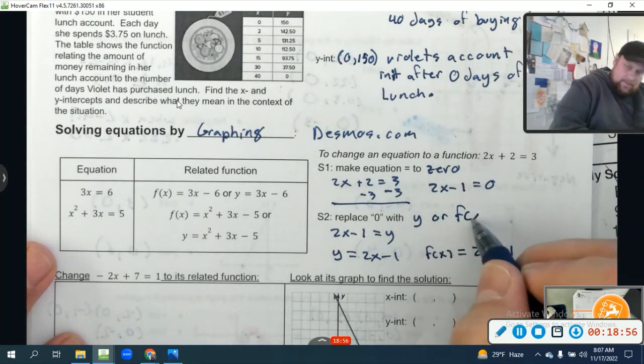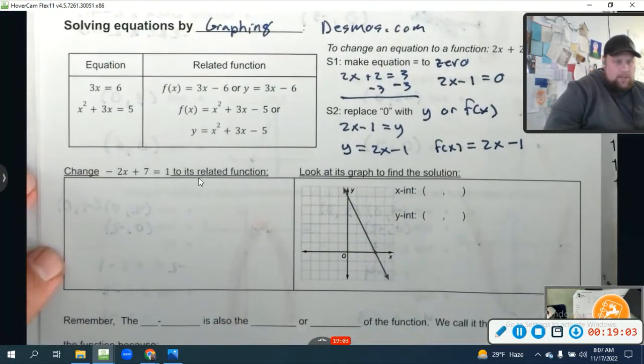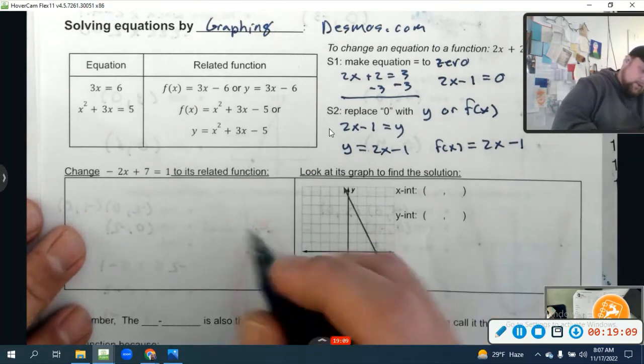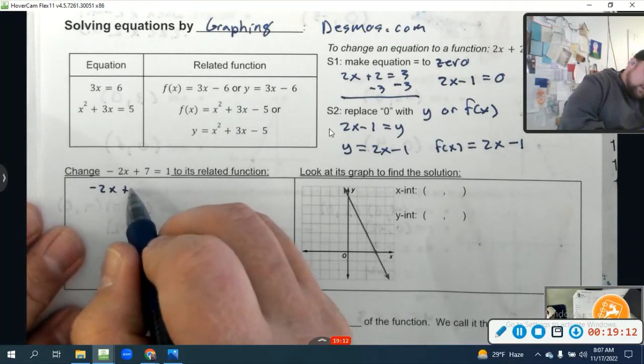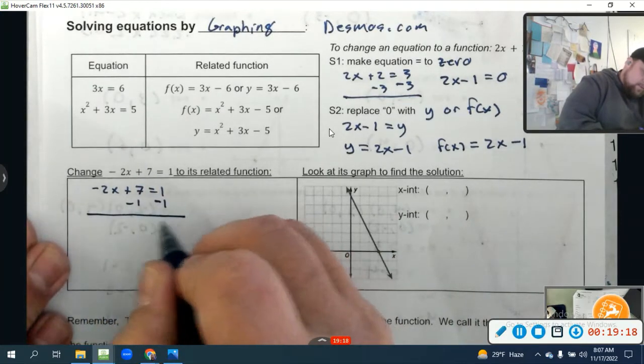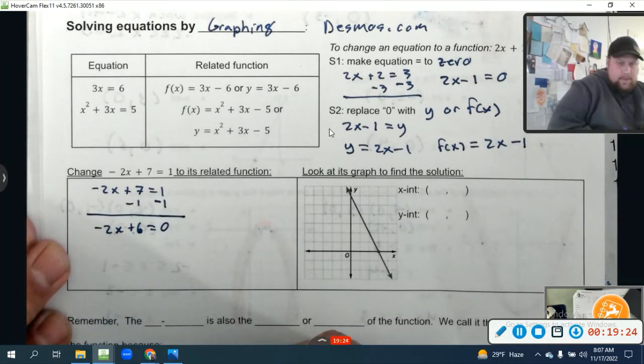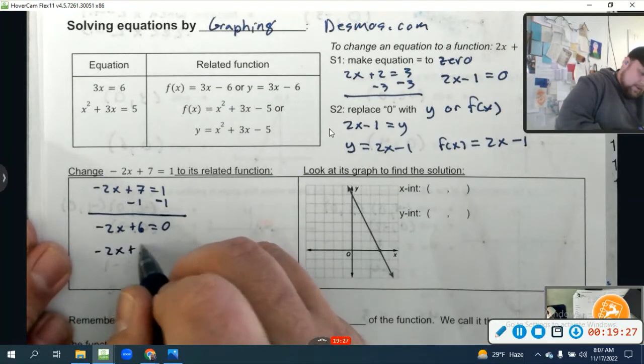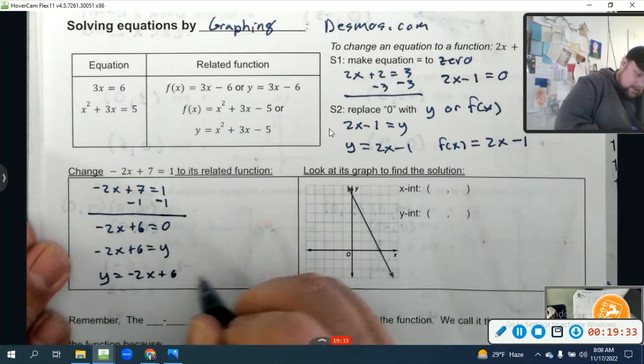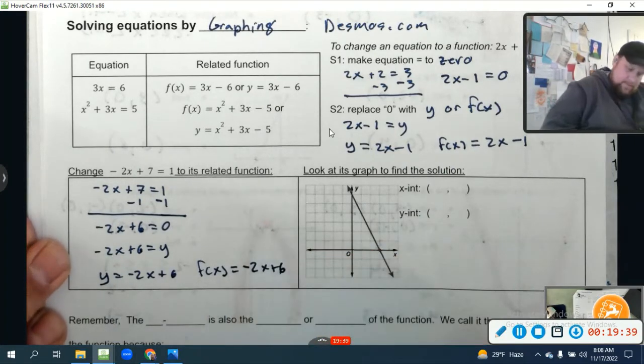I want to change -2x + 7 = 1 to its related function. Let's write it down: -2x + 7 = 1. Step 1: set it equal to 0. -2x + 6 = 0. Now I'm going to replace that with y: -2x + 6 = y, or y = -2x + 6. You could also say f(x) = -2x + 6.